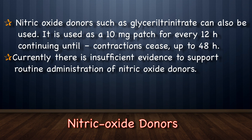Nitric oxide donors such as glyceryl trinitrate can also be used for spontaneous preterm labor, as a 10 mg patch every 12 hours continuing until contractions cease, up to 48 hours. Currently, there is insufficient evidence to support routine administration of nitric oxide donors.